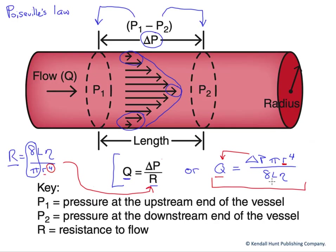On the bottom, we have the length and the viscosity. Inversely proportional. The longer the pipe, the lower the flow. The greater the viscosity, the lower the flow. Those all make good sense, hopefully.